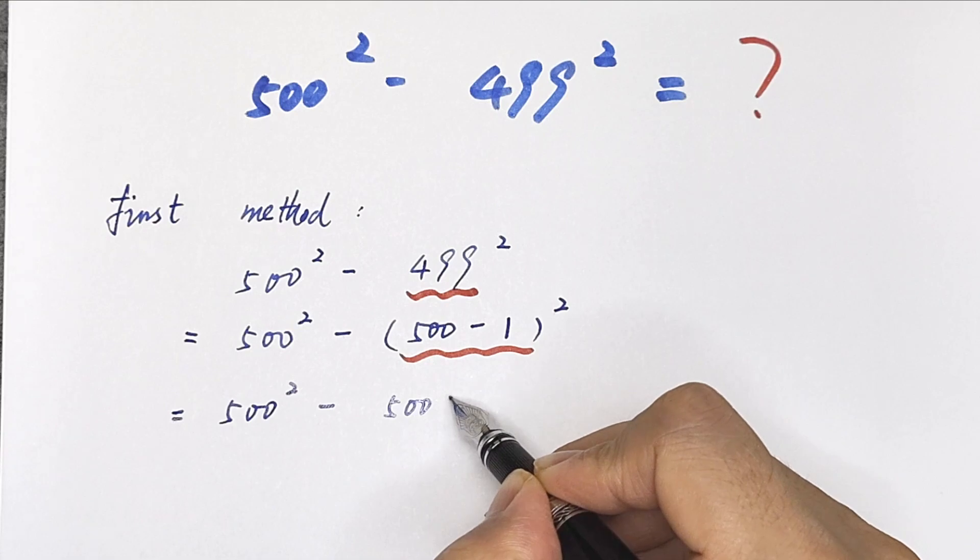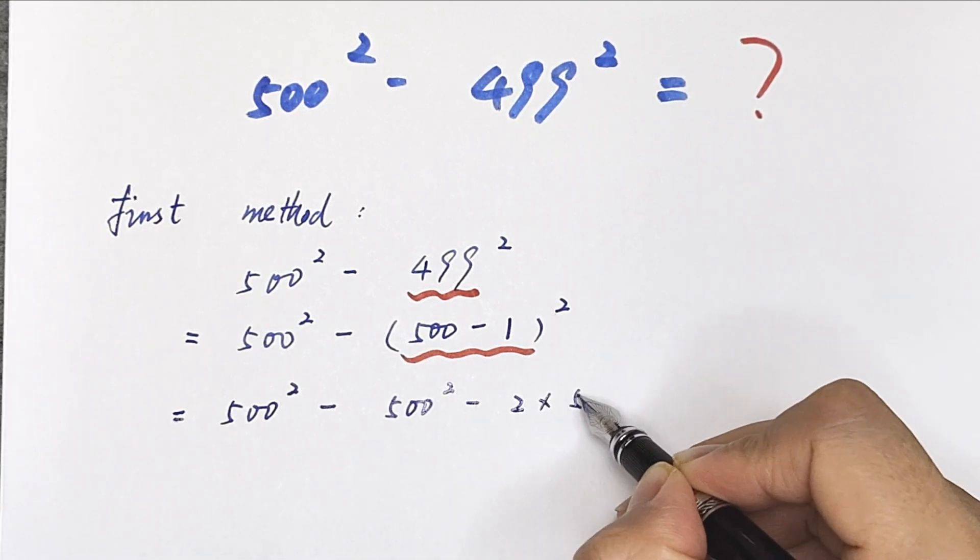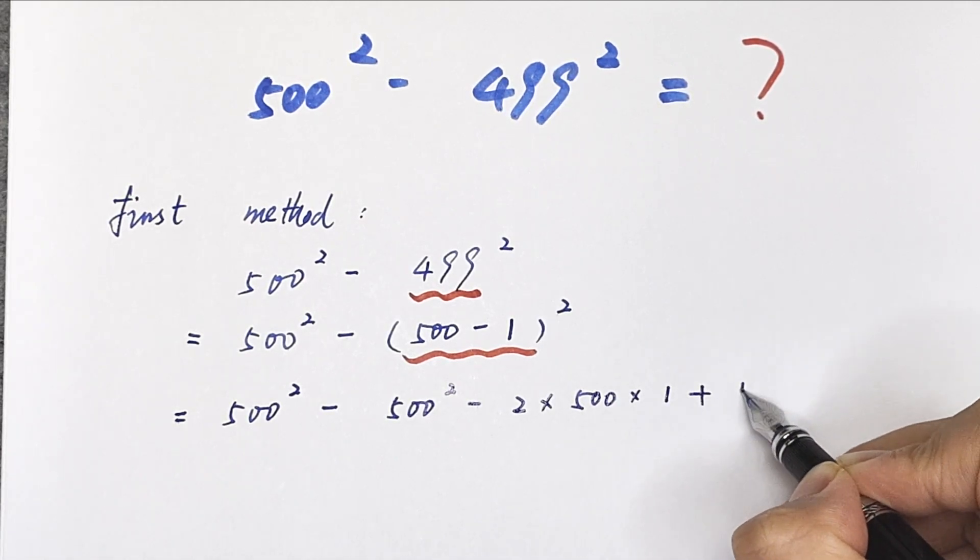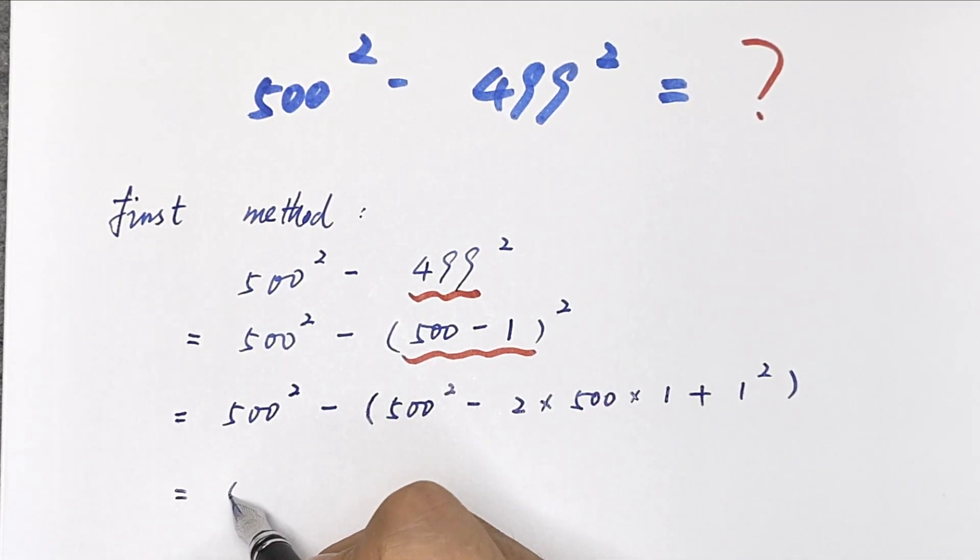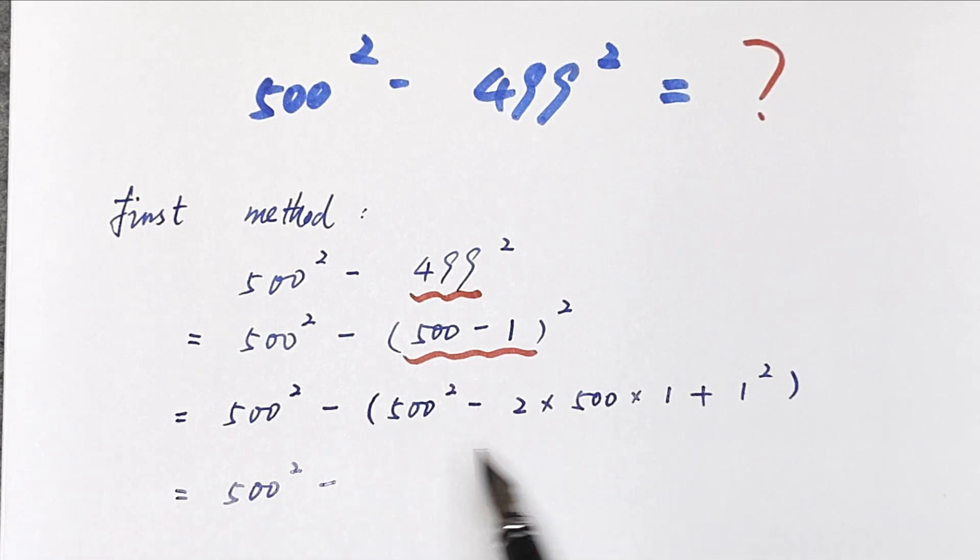500 squared minus 2 times 500 times 1 plus 1 squared is equal to 500 squared minus, we open the bracket.